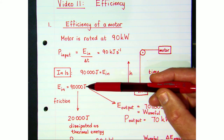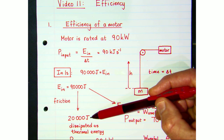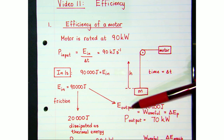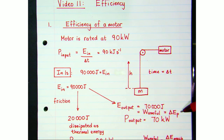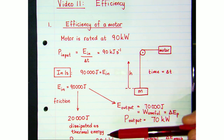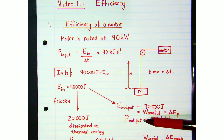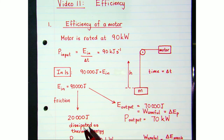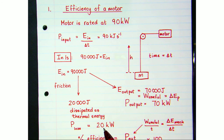In one second we've got a certain amount of energy being provided to the system; some is dissipated as heat energy and the rest goes to doing useful work like lifting the mass through some height h. So the output power would be 70,000 joules per second — 70 kilowatts — whereas the power loss would be 20 kilowatts, meaning 20,000 joules of energy is lost per second.